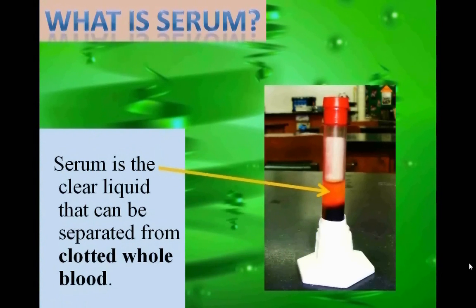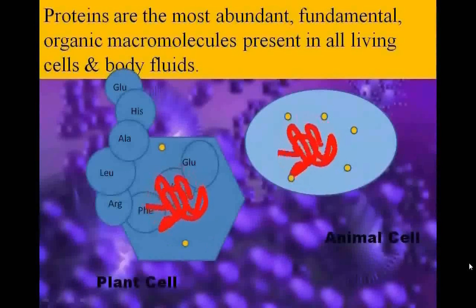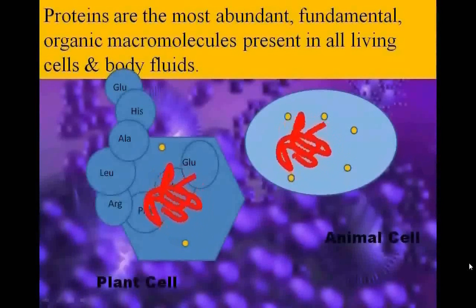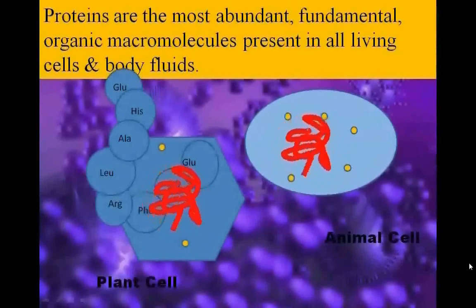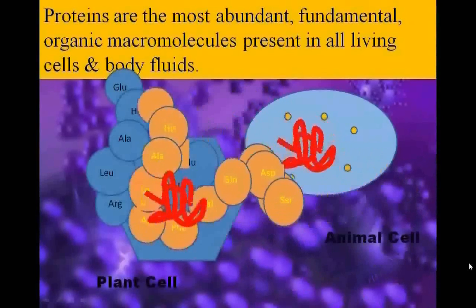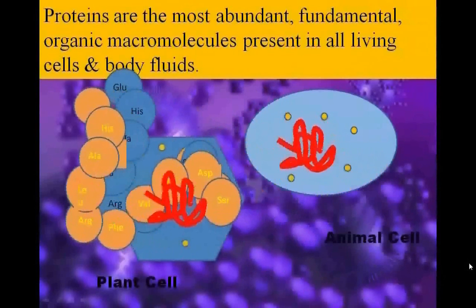What are proteins? Proteins are the most abundant, fundamental, organic macromolecules present in all living cells and body cells. Proteins are composed of one or more chains of amino acids. They are essential in the diet of animals and important in all biological processes.